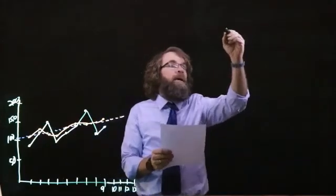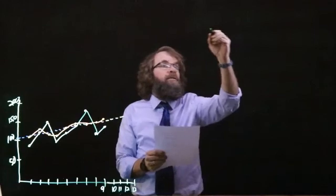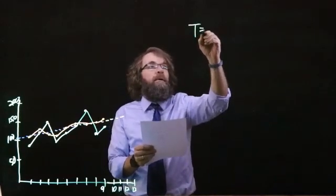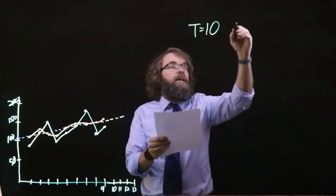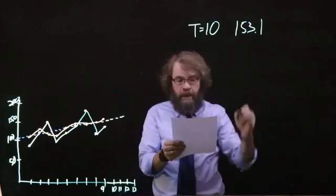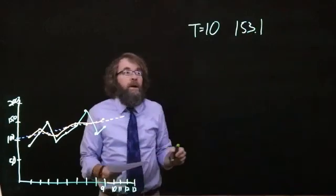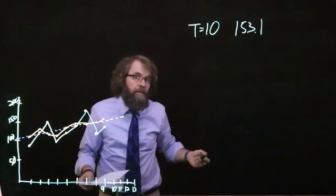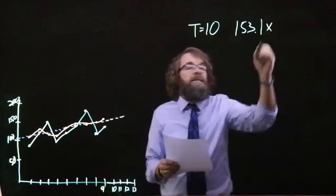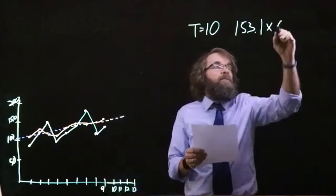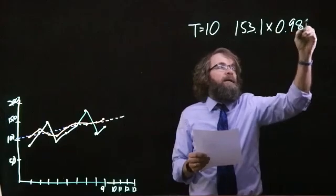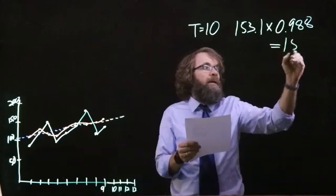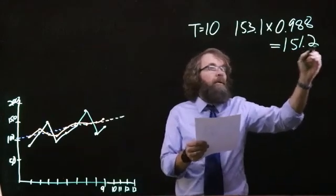In the last step, we calculated those straight line numbers. For period 10, the straight line forecast was 153.1. Period 10 is the second quarter of a year, so we multiply that by the seasonal index for the second quarter, which is 0.988, and we get a forecast for period 10 of 151.2.